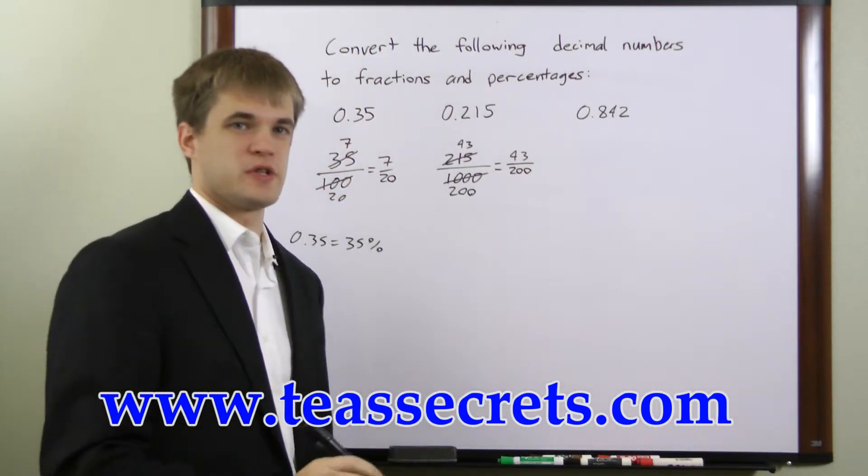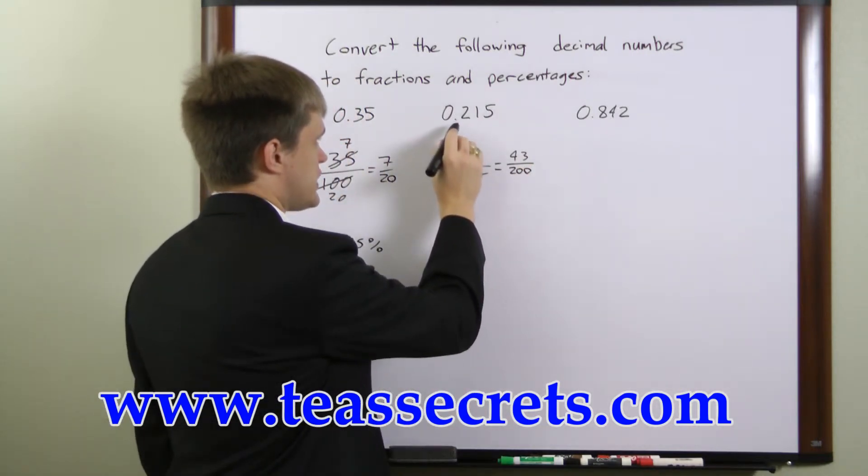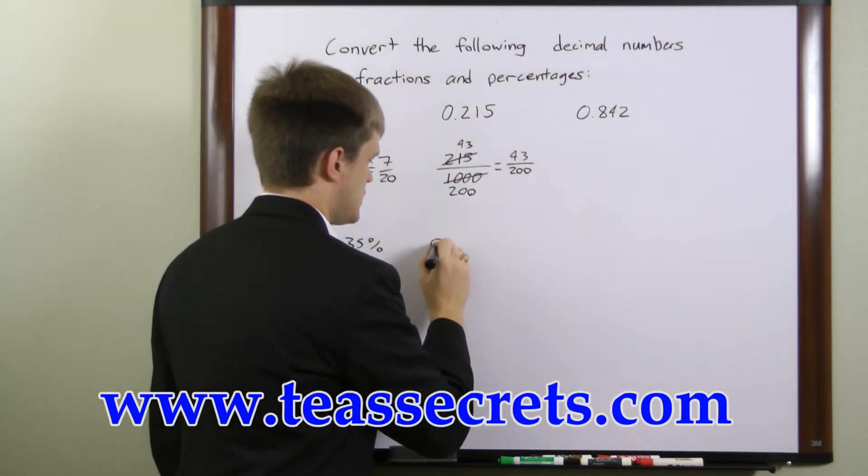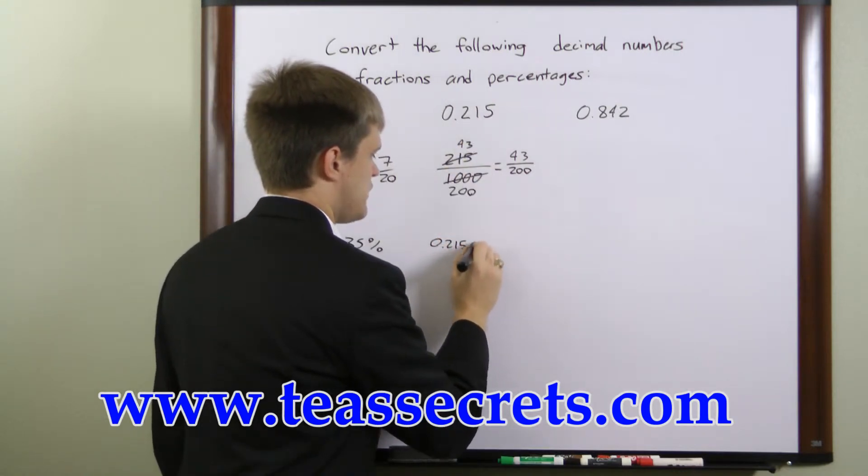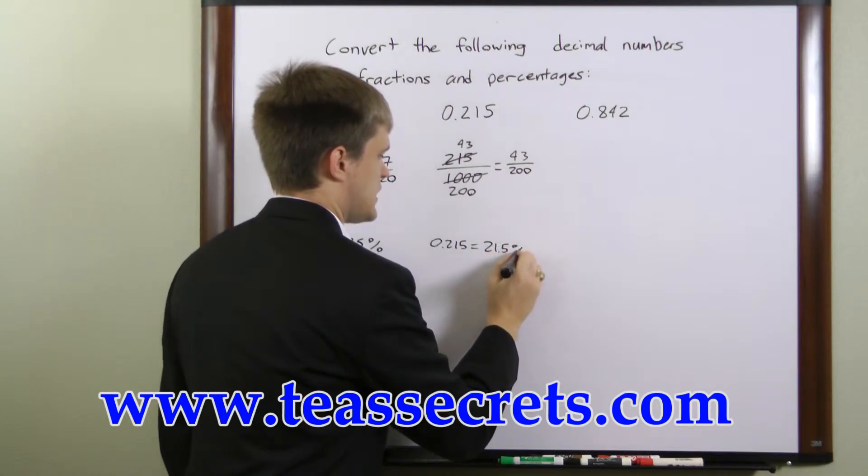To convert to a percentage, we can just move the decimal point two places to the right, so 0.215 is equal to 21.5 percent.